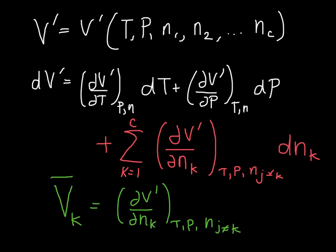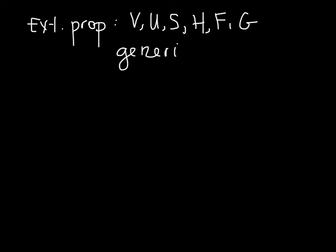And we can do this for any extensive property. So, on that list would be volume, internal energy, entropy, enthalpy, Helmholtz free energy, Gibbs free energy. And we are going to call this, and this is what the book does, generically we're going to use the symbol B. So, B could represent any of these extensive properties.